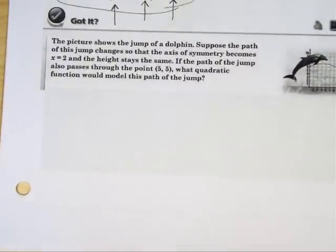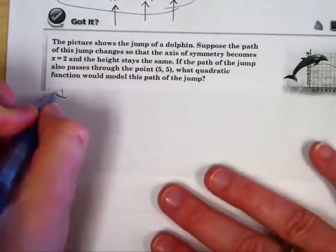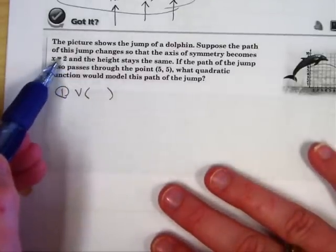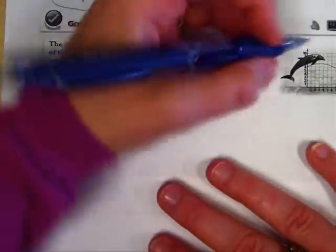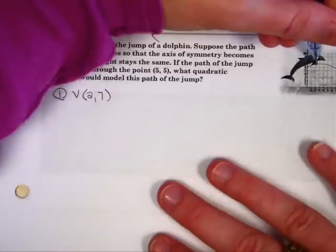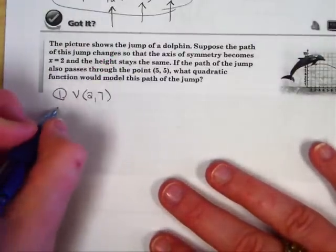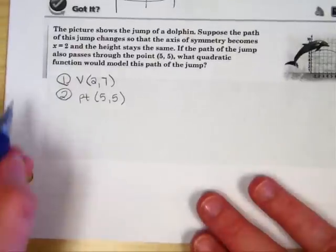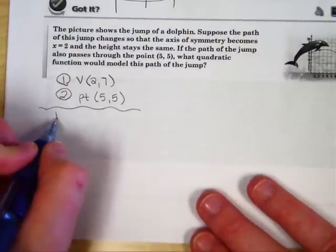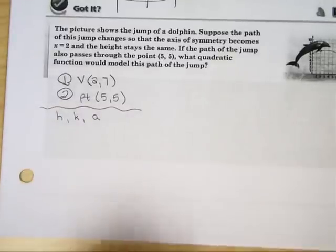The got it question in part 5. The picture shows the jump of a dolphin. Now suppose the path of this jump changes so that the axis of symmetry becomes x = 2, but it stays at the same height. If the path of the jump also passes through (5, 5), what is the quadratic function that would model the path of the jump? Well, you're going to do the same thing. The only difference is going to be your vertex is new. So they said the height is at 2. So we're going to do 2, 7, and that's our vertex. And if you go over here, you can see that at (2, 7), that is where the maximum point is. Plus the fact that they told us that x is 2, and the height stays the same. Now they were nice in this problem, and they gave us the other point of (5, 5). We're going to go through the same steps we did before. We have the 2 most important things. Now we really have to solve for h, k, and a. Remember that h and k are easy, and that a takes a little bit of work.